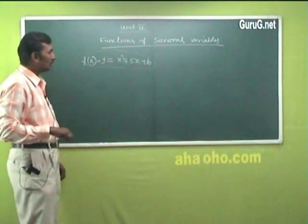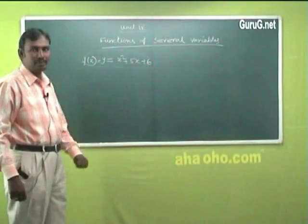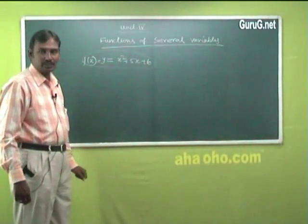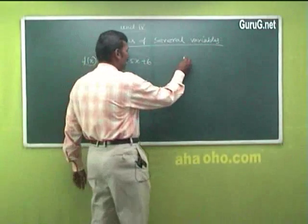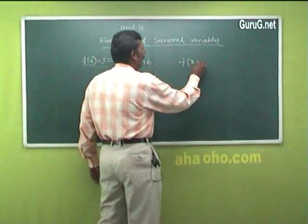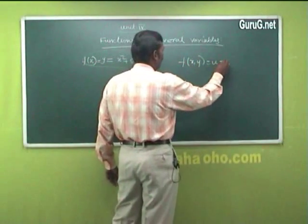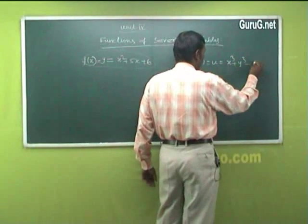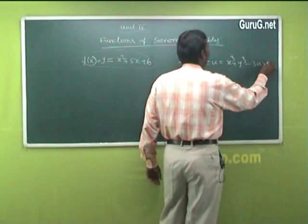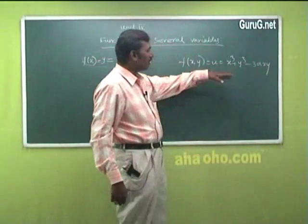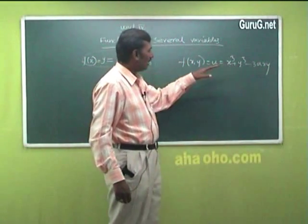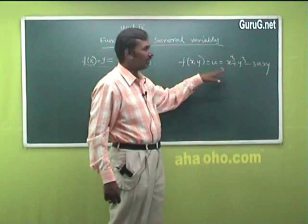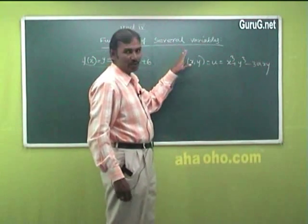Suppose a function has more than one independent variable. Those functions are called functions of several variables. For example, f(x, y): I take it as u = x³ + y³ + r - 3axy. It has two independent variables, x and y. Whenever the function has more than one independent variable, we call it a function of several variables.